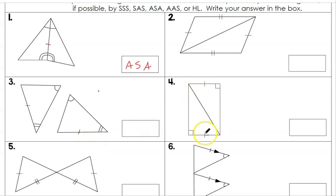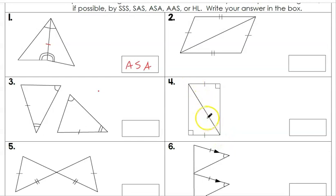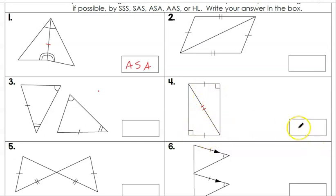Let's take a look at number four. We have two right triangles that share a side which happens to be the hypotenuse, so that side is congruent. They also have a congruent pair of corresponding legs, so this is an example of Hypotenuse-Leg.